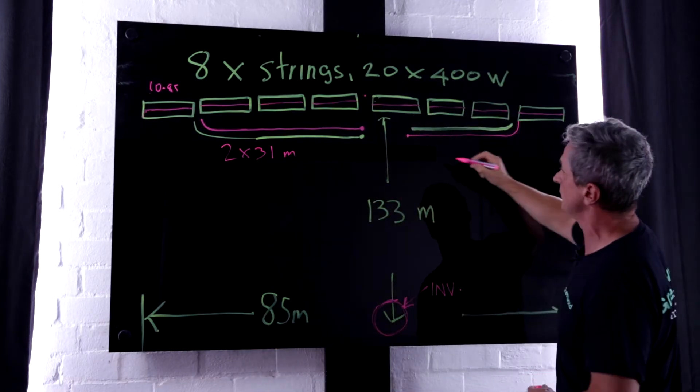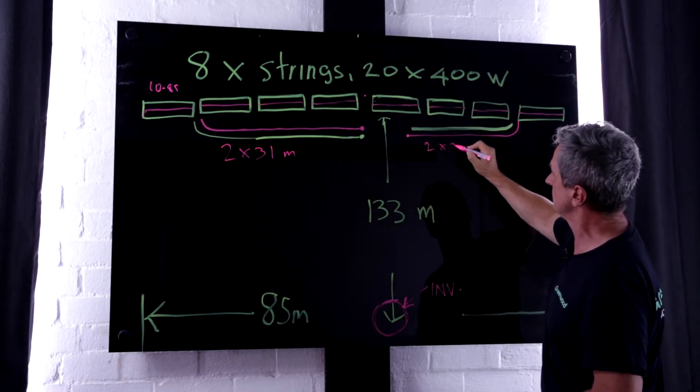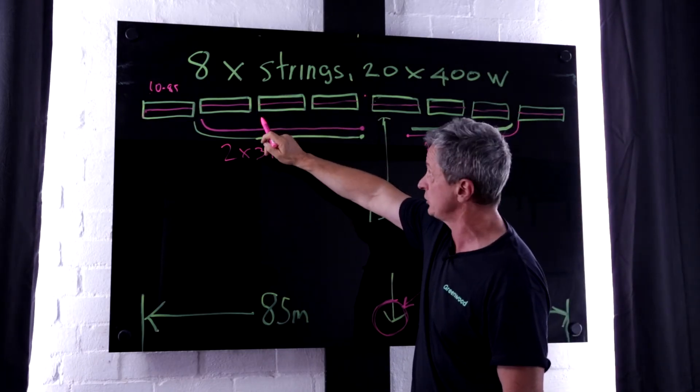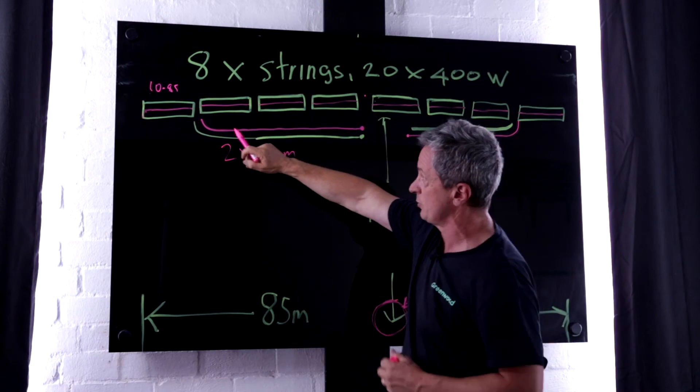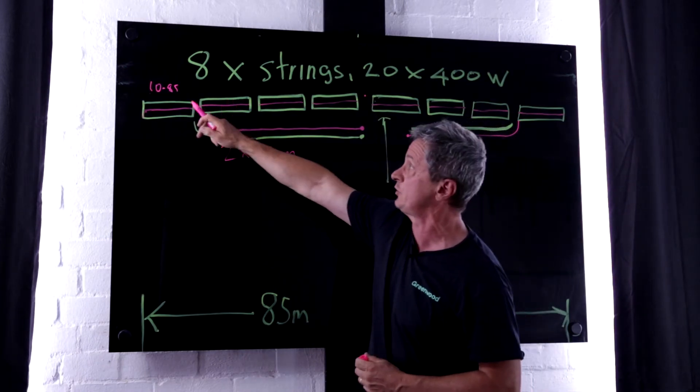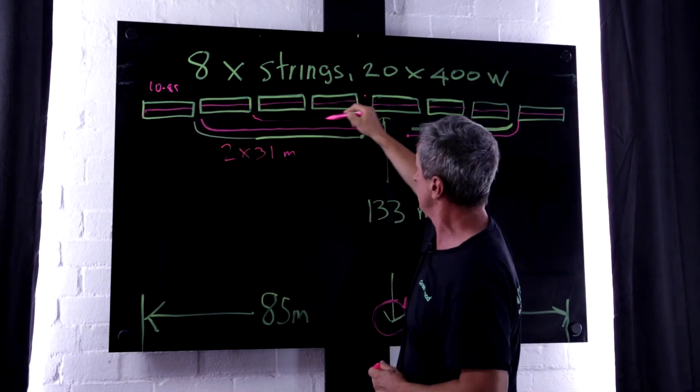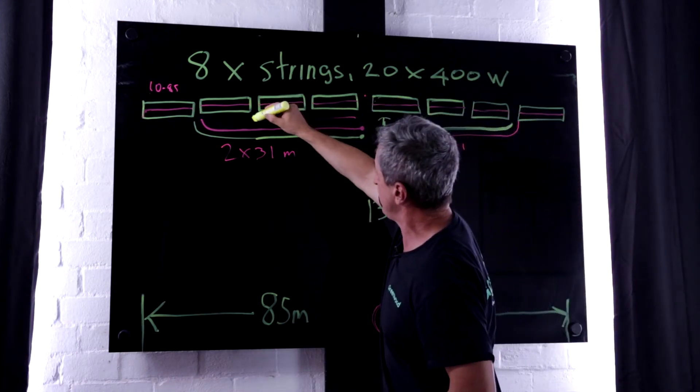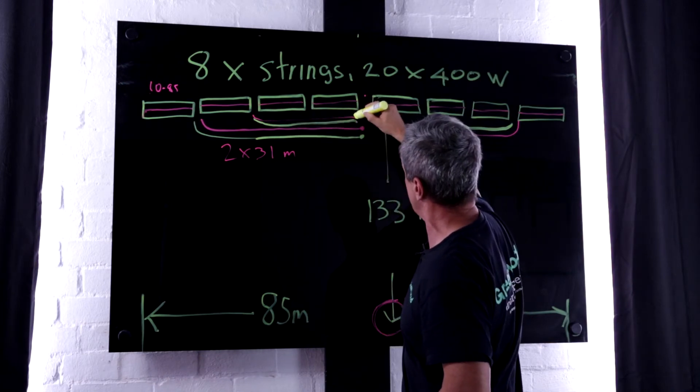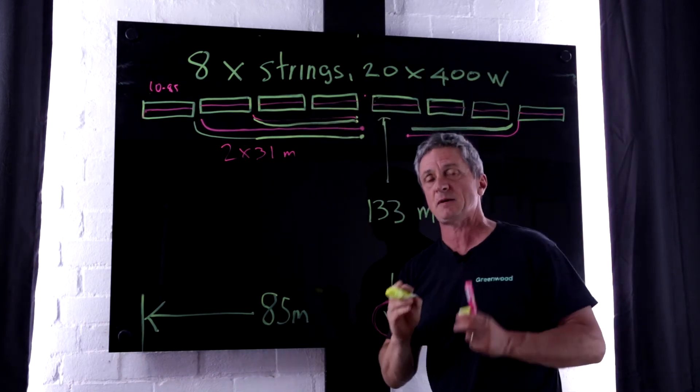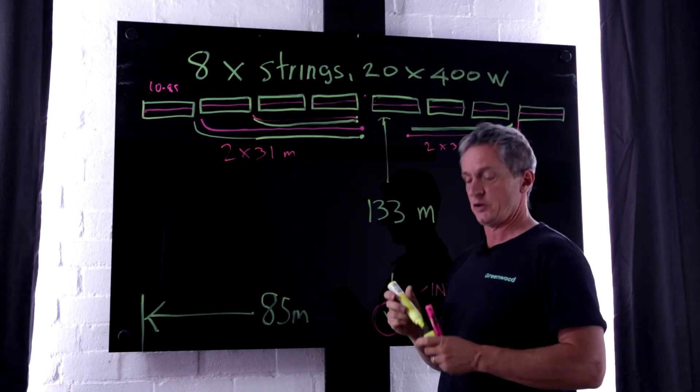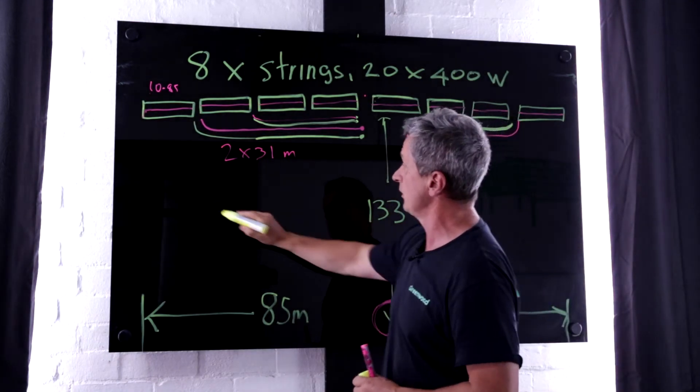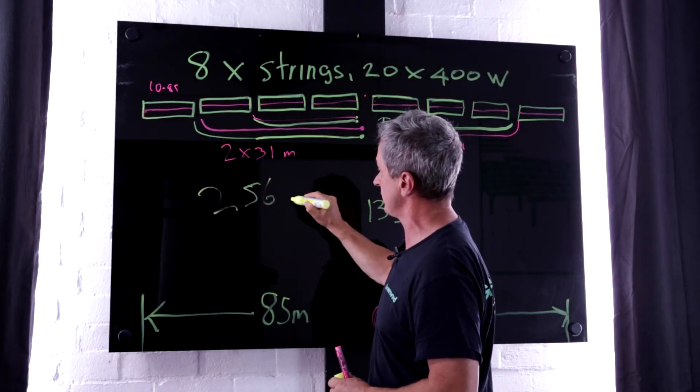And on the same side, we have here. Now obviously the next string, same consideration, that distance you remove another 10.85 or actually two times 10.85 to get to that point. So it's a fairly simple way of working out how much cable per row that you use. And in the case that we're presenting today, the total is 256 metres.